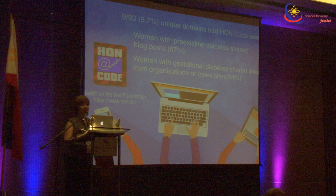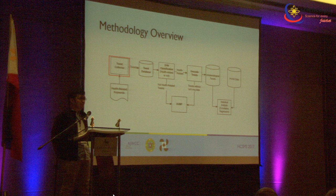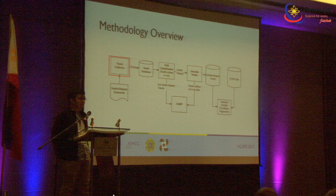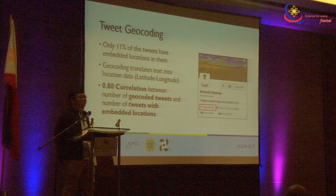After storing tweets in a database, the next step is the classification methodology — segregating tweets that could be used for health research from those that cannot. We also do geocoding: we try to locate tweets that don't have embedded locations. Using our algorithm, we assign latitude and longitude data — for example, to Quezon City — and there is high correlation with tweets that do have embedded locations.